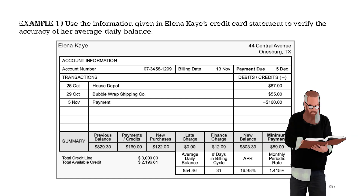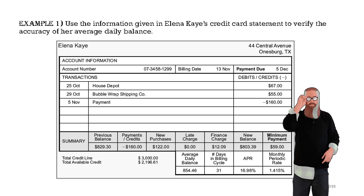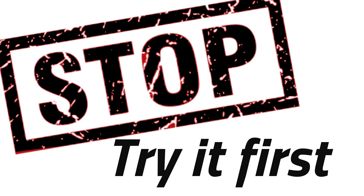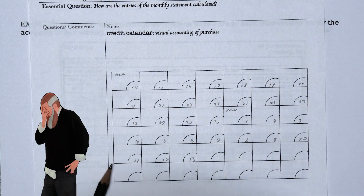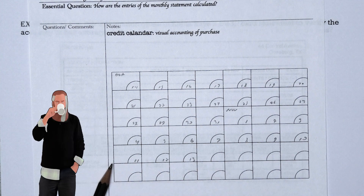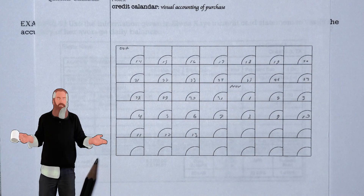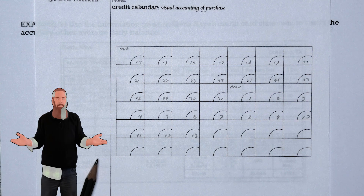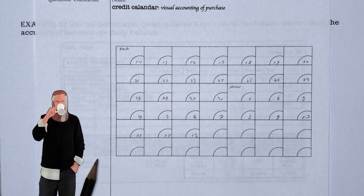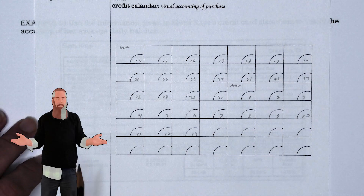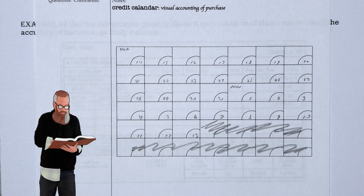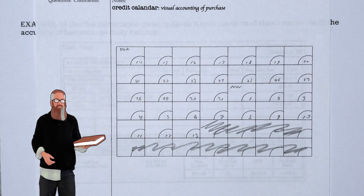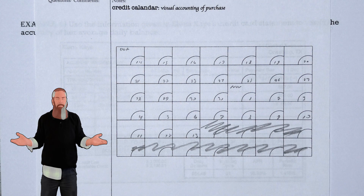Let's calculate the average daily balance using a credit calendar. Use the information given in Alina Kay's credit card statement to verify the accuracy of her average daily balance. On a blank sheet of paper, draw a grid with seven boxes across and five boxes down, with a little arch in the bottom of each corner. On Alina's statement, the billing cycle is 31 days. Shade in the last four unused days, then enter the billing date — November 13th — in the corner of the last day.